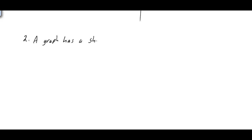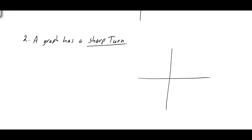The second situation is if a graph has a sharp turn. What do we mean when we talk about the graph having a sharp turn? Basically, that means if you look at the graph, it's going to look like an absolute value where you have a sharp V. At this sharp turn, your graph will not have a derivative — the derivative does not exist.